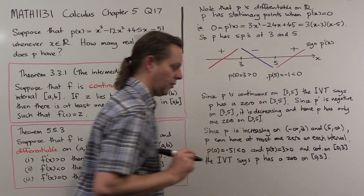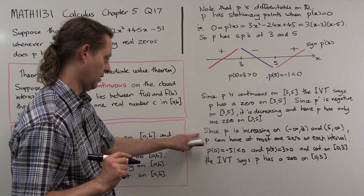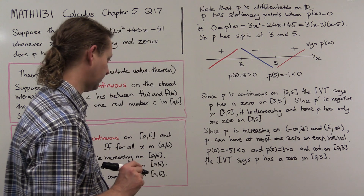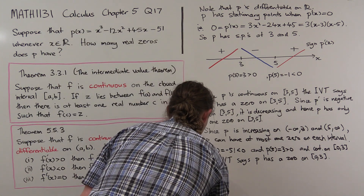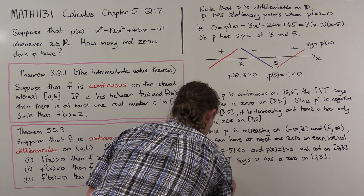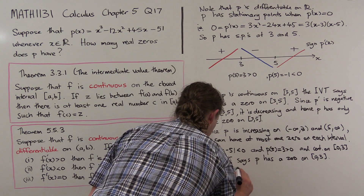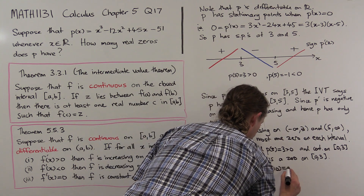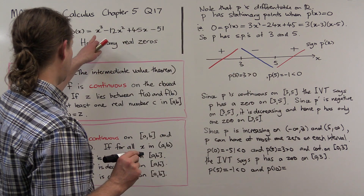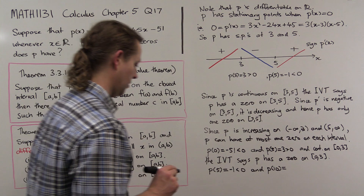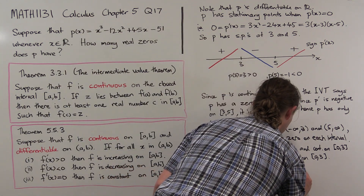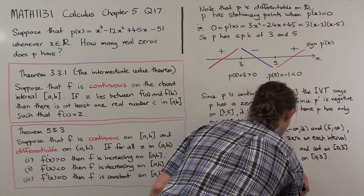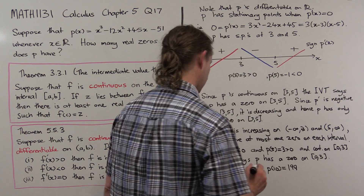We've already said P can only have one zero on the interval from minus infinity to 3, so there's exactly one zero on that interval. Now for the last interval: P(5) = −1, which is negative. Let's take x = 10 — I guessed that 10 is big enough to give a positive value. P(10) = 199, which is positive.